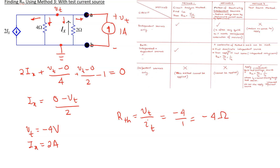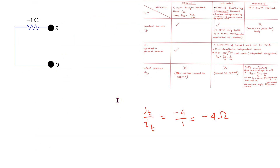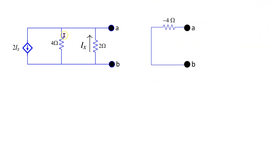This is the summary result. This circuit containing dependent sources only is equivalent to a minus 4 ohm resistor from the point of view of terminals A and B. The negative value of the Thevenin resistance tells us that, according to the passive sign convention, this circuit is supplying power when any component is connected between A and B.